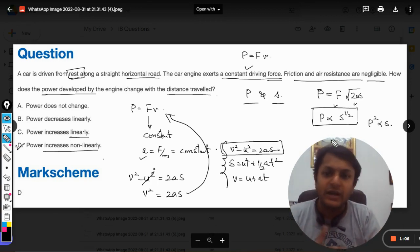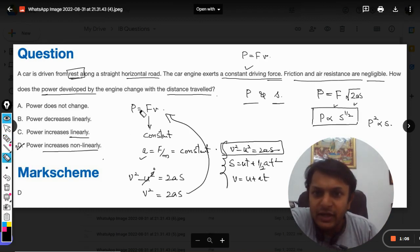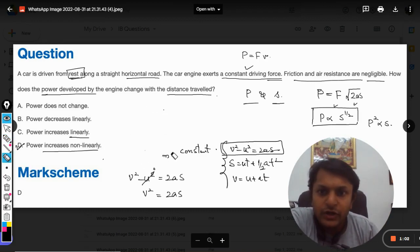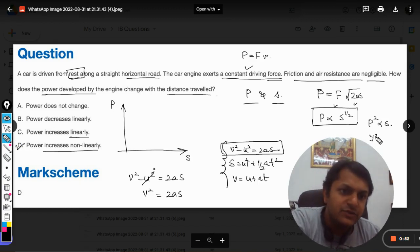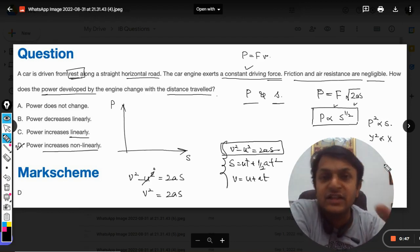Just wondering how the graph will look like for power and displacement. I'm rubbing a little part of it. The graph will be somewhere like this: this is power, this is displacement.